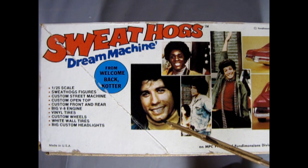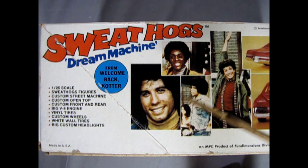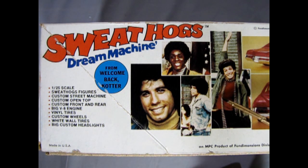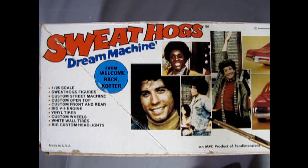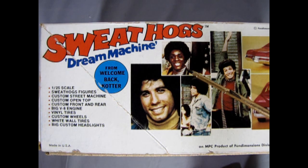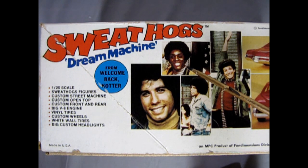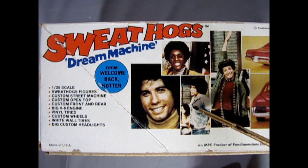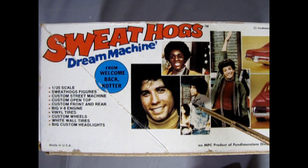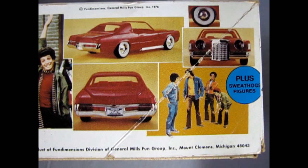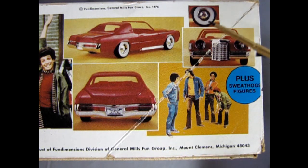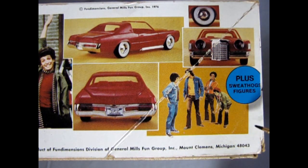So right here we have Vincent Vinnie Barbarino as played by John Travolta. And then Arnold Dingfelder Horshack, which was played by Ron Palillo. Freddy Percival Boom Boom Washington as played by Lawrence Hilton Jacobs. And finally, this is a big one, Juan Luis Pedro Filippo de Huevos Epstein as played by Robert Hegyes. And here we have the three quarter rear shot of the car, as well as the back end, front end, your white wall tires, and the four Sweat Hogs.